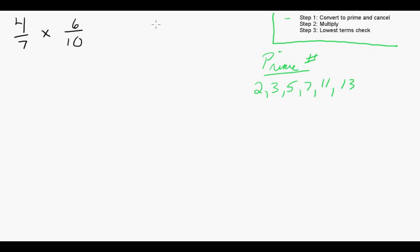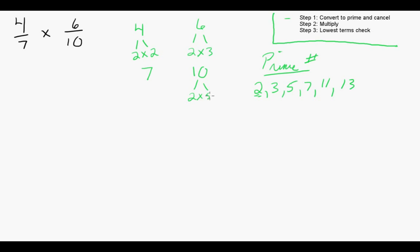In order to convert these to prime, we're going to take the first one, 4, and convert it to the smallest prime numbers that we can. It's equal to 2 times 2. 6 is equal to 2 times 3. 7 is already prime, so we're just going to leave it as is. 10 converts to 2 times 5.